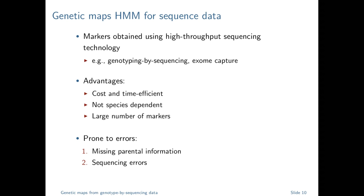We come to this problem because we have data from newer technologies — markers obtained using high-throughput sequencing technology. These include exome capture and the one we're using today: genotyping by sequencing (GBS). These high-throughput sequencing technologies have big advantages: we can get information on a huge number of markers cheaply. What that costs us is additional sources of error or uncertainty.